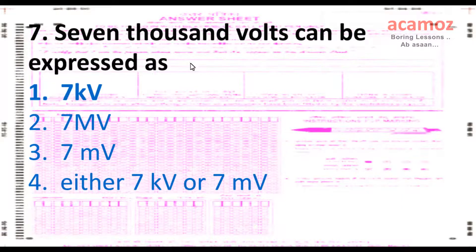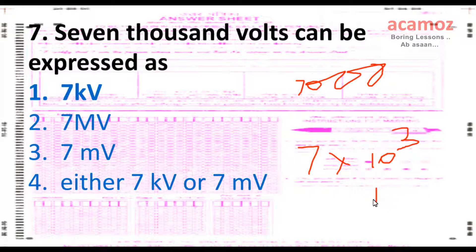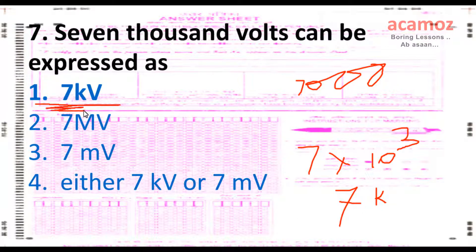7000 volts can be expressed as 7 × 10³, which is equivalent to 7 kilovolts. So 7000 volts can be expressed as 7 kV.